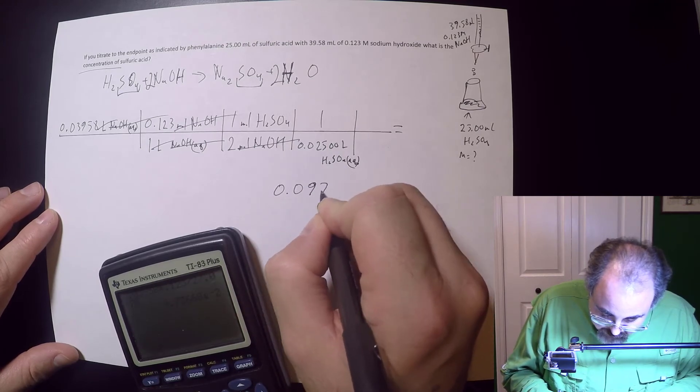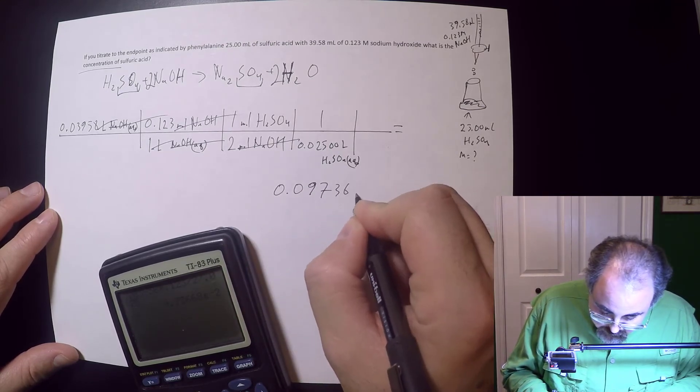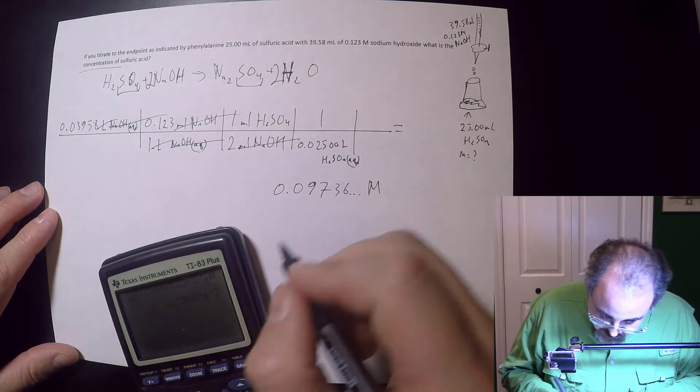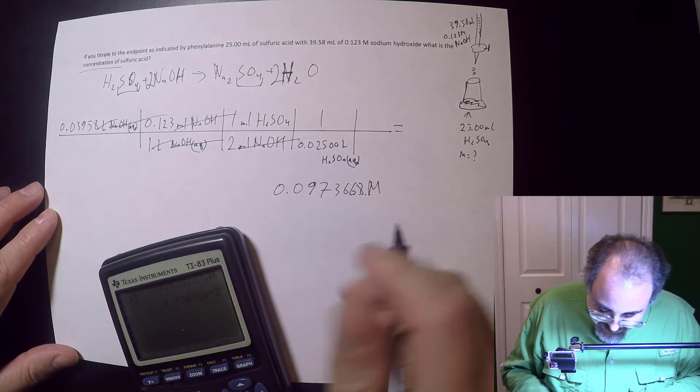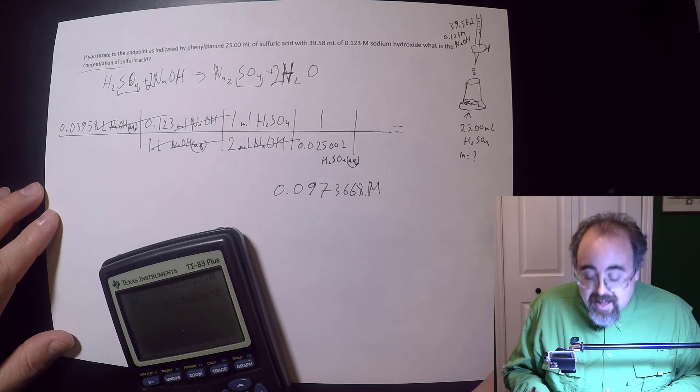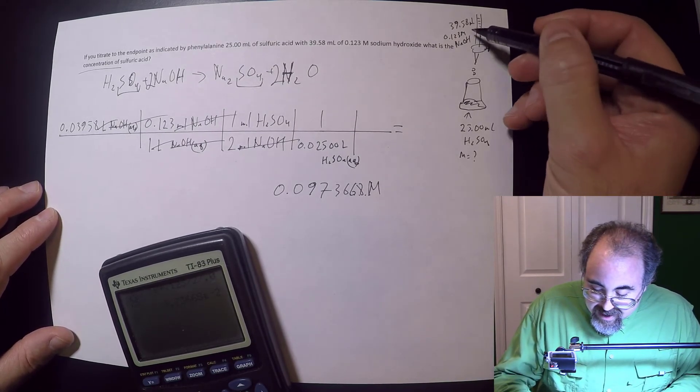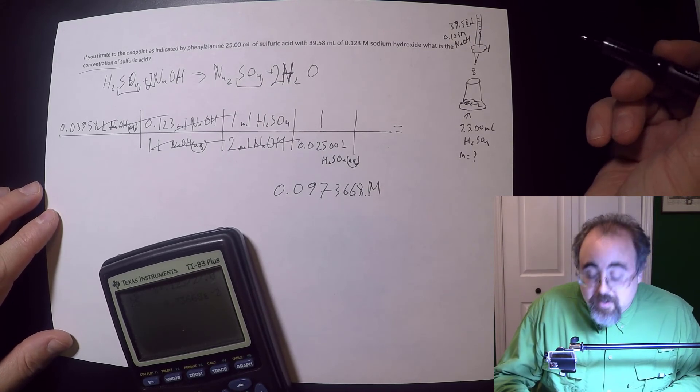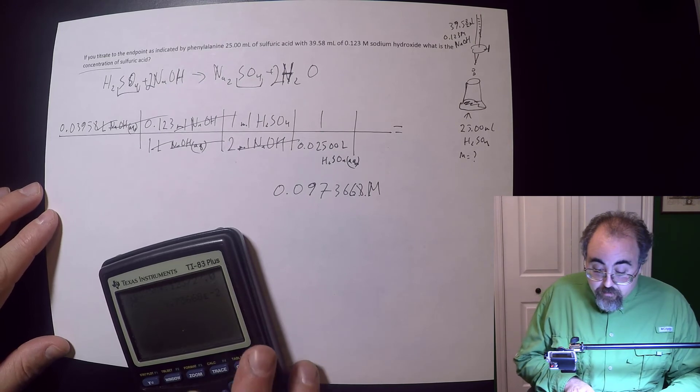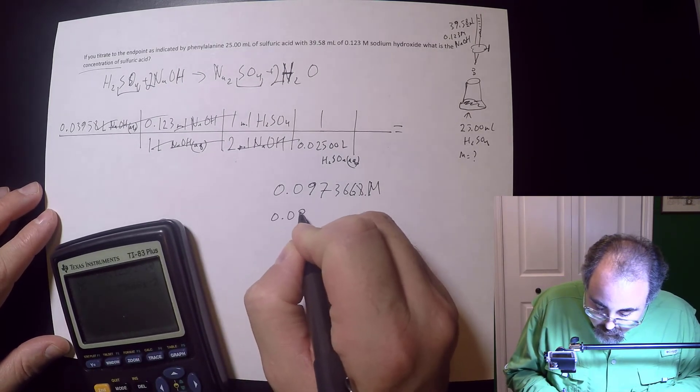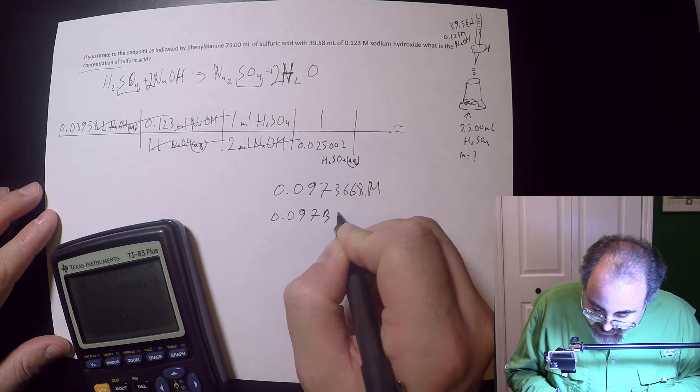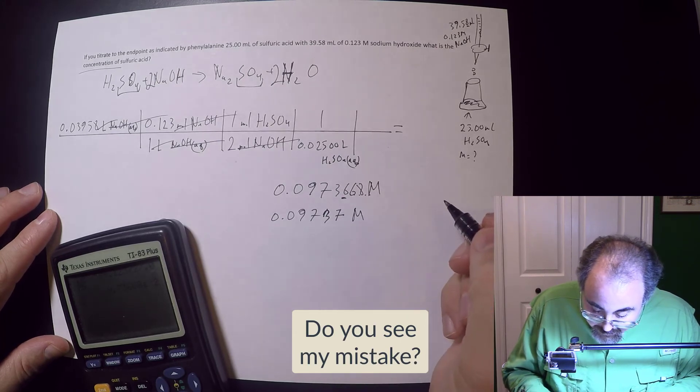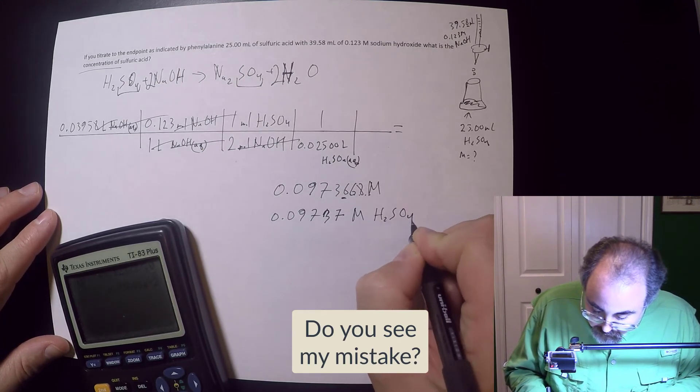And that gives me 0.09736 molar. Sig figs wise, I've got four. I need more sig figs. I'm not done yet. 6, 8 molar. Titrations, you get a lot of sig figs. This is one where if you're doing these in a lab and you don't do the estimated digit, that guy's always the estimated digit, I always take off points. At least I usually do because this is good data. So this is going to be 0.09737 molar because that's the good number.